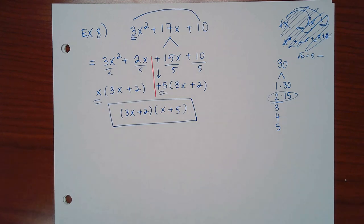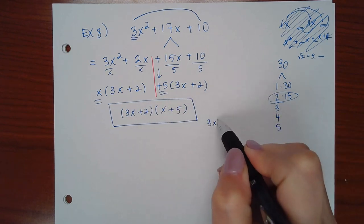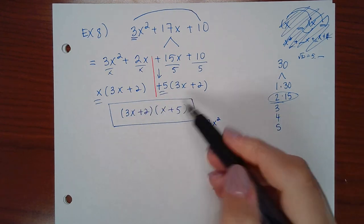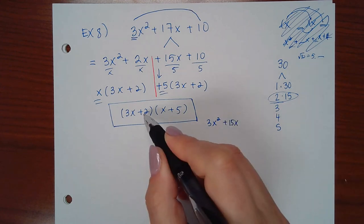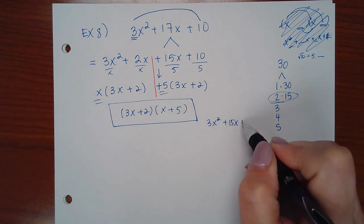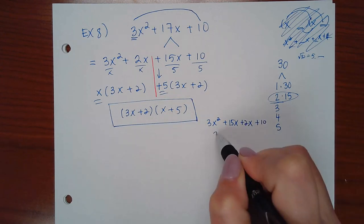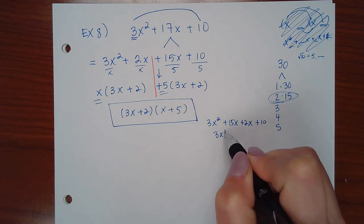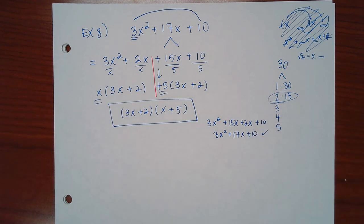Checking: 3x·x = 3x², 3x·5 = 15x, 2·x = 2x, 2·5 = 10. Combining like terms in the middle gives 17x, so the result is 3x² + 17x + 10, which matches the original. The factoring is correct.